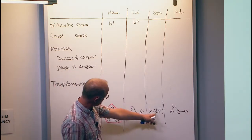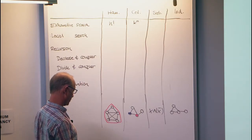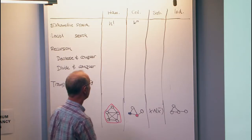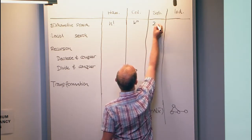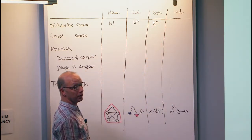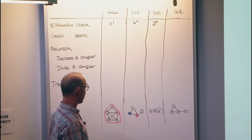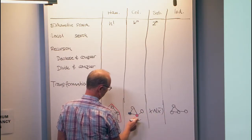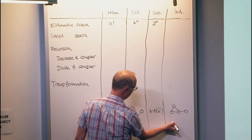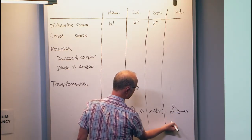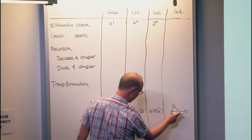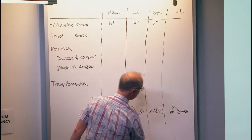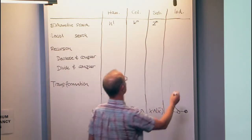Satisfiability — here's a small instance. And obviously I can solve satisfiability by looking at all possible valuations of the variables. And independent set is just a variant of this: find a large independent set in this graph. So there is an independent set here of size 2, namely the black one. And I can also do that in time 2 to the n.